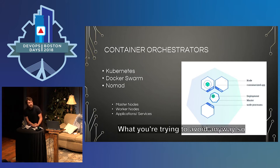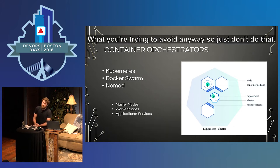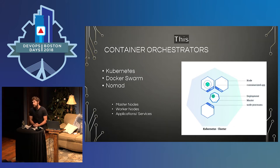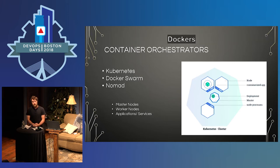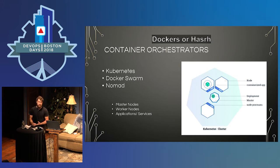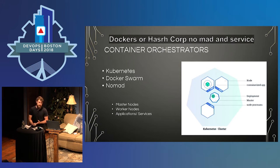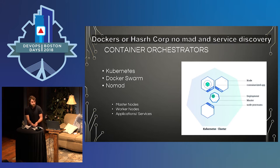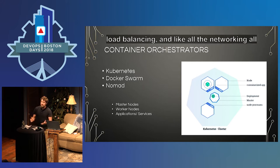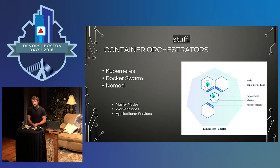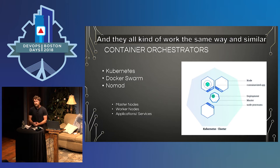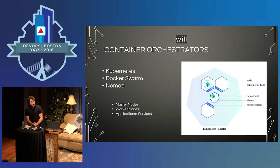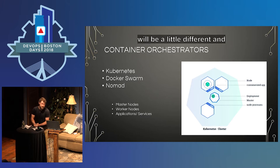This is where container orchestrators come from — Kubernetes, Docker Swarm, and HashiCorp Nomad. These address a lot of the problems mentioned earlier: service discovery, load balancing, networking, and all that sort of stuff. They all work similarly and have pretty similar architectures. The underlying tech may differ slightly and they may abstract some pieces, but essentially the architecture will be the same.